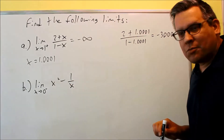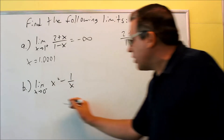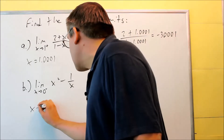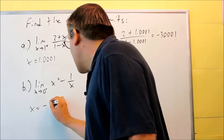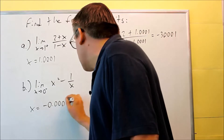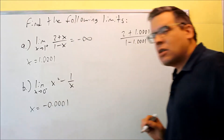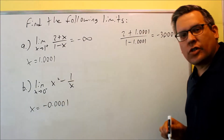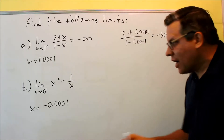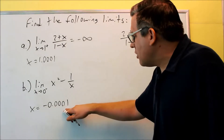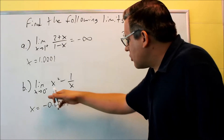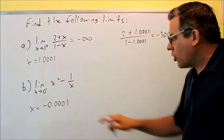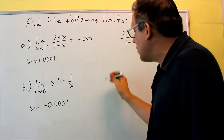Next, I'm going to do the one down here. For this one, I'm going to pick a number just slightly less than zero. So in this case, I'm going to use −0.0001. It's got to be a negative number because you're approaching zero from the left, on the negative side. We're almost at zero, but just slightly less than that. We're going to plug this into all the x's.